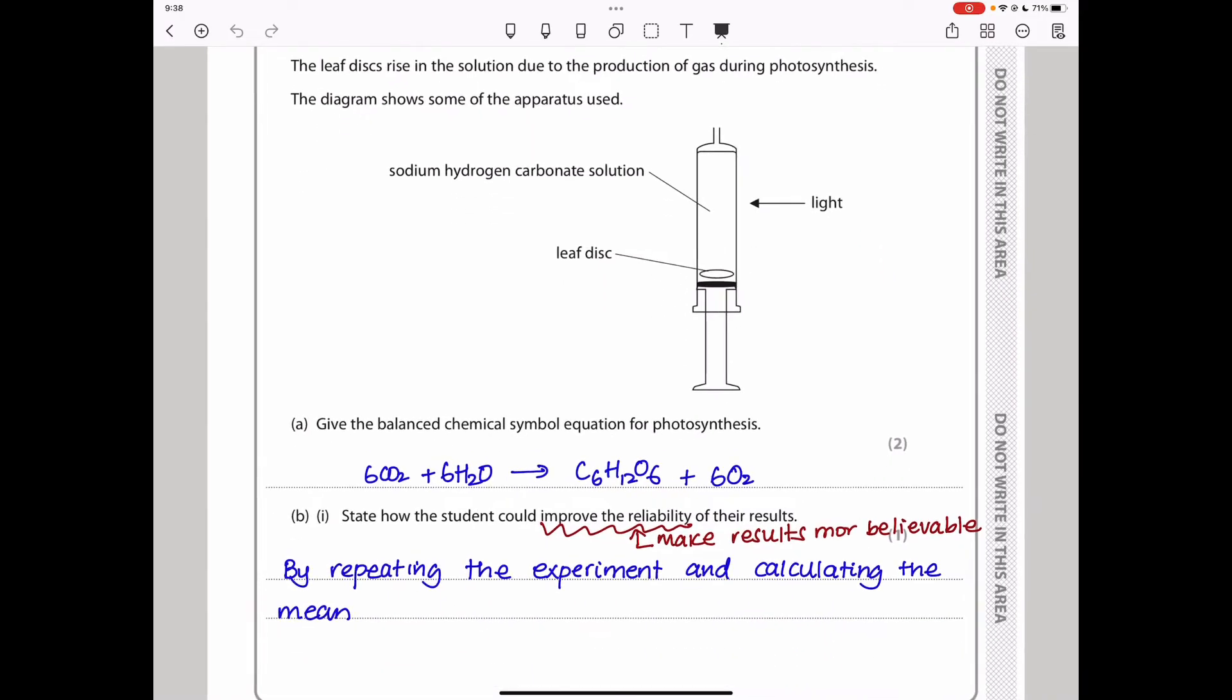Give the balanced chemical symbol equation for photosynthesis. Photosynthesis occurs between carbon dioxide and water, producing glucose and oxygen. So you have to multiply by 6 and 6 here.